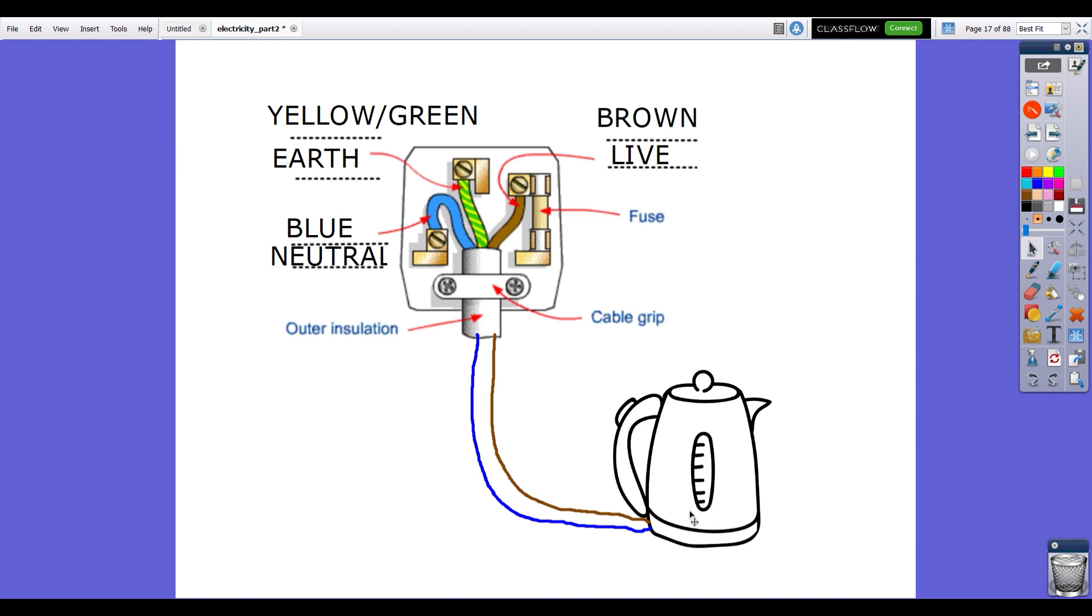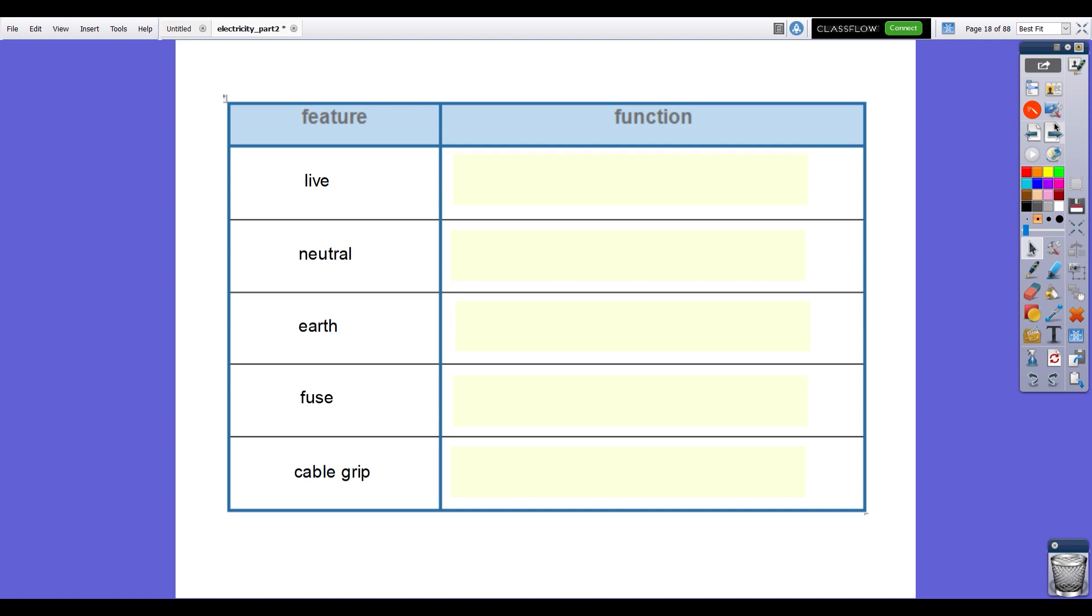The electrons come in and then leave and come in because they're alternating. Remember, we looked at that. It doesn't really matter that they're alternating. They can still transfer energy just as effectively. The live is called the live because it's the one connected to the power station. The neutral is really just a reciprocal for receiving or donating any electrons required to make a complete circuit.